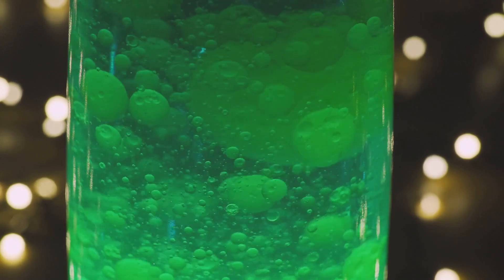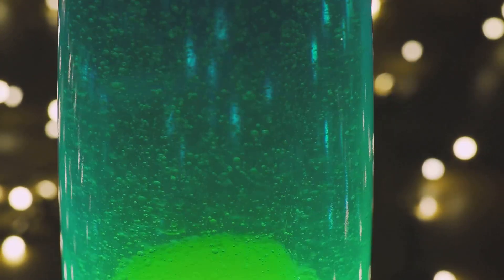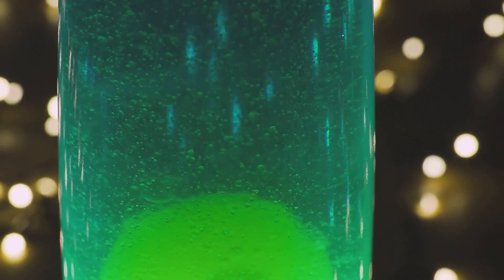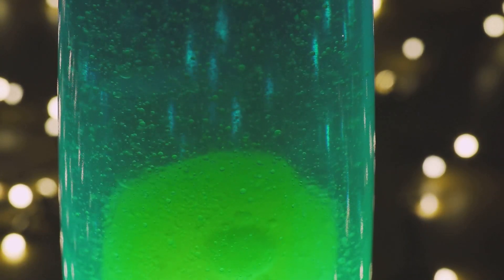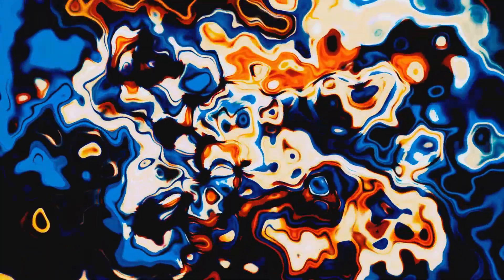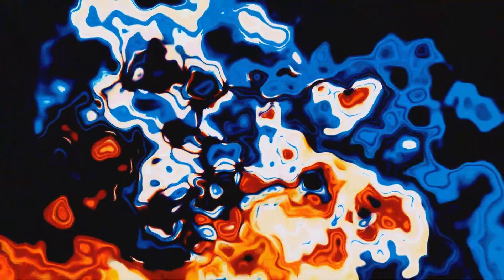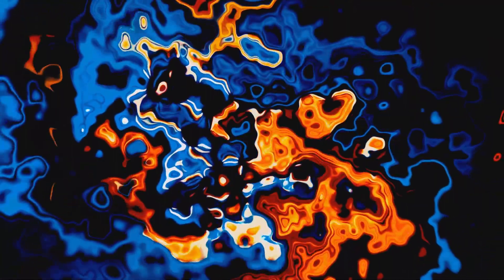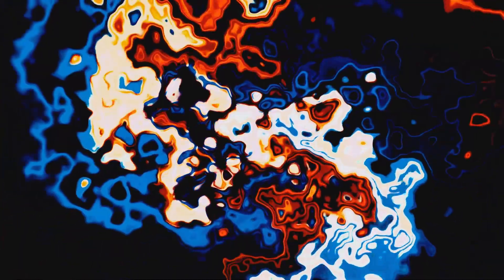Once it cools down a bit, it becomes denser again and sinks back to the bottom. This cooling and sinking is just as important as the rising. The cycle repeats, creating those mesmerizing blobs of color that dance and morph right before our eyes. It's a continuous loop of heating, rising, cooling, and sinking, all driven by the simple principles of heat and density.